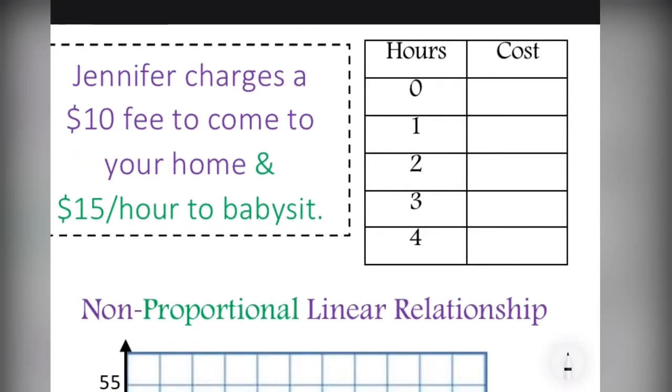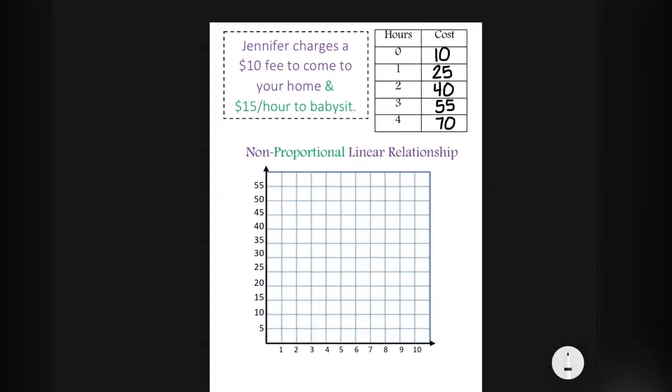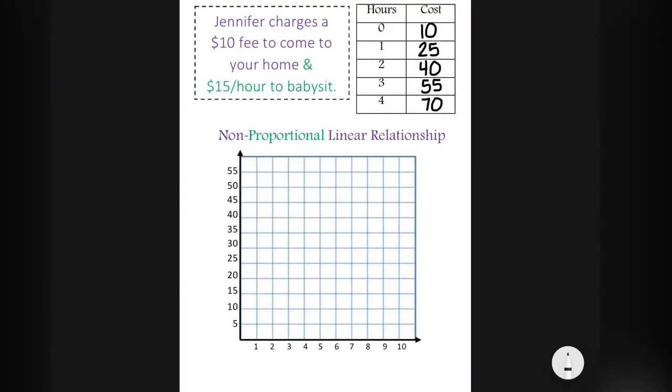For zero hours, Jennifer is going to charge $10. Now, after the $10, each hour, she will charge $15 additional dollars. So at hour one, her fee is $25, 10 plus 15. At hour two, it's $40, 10 plus 15 plus 15. You can see how this is going to continue to increase by $15 an hour after the $10.